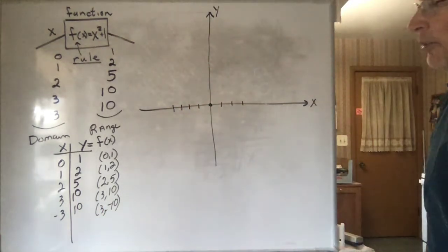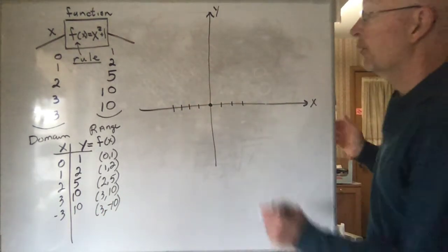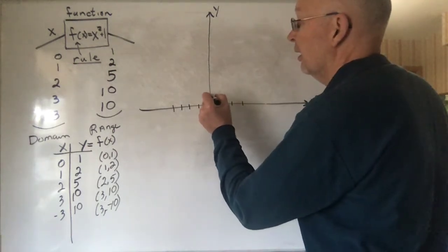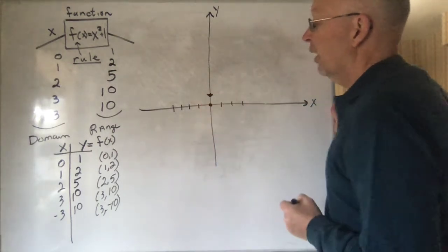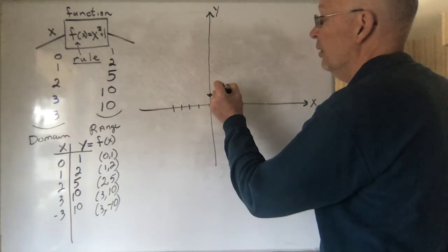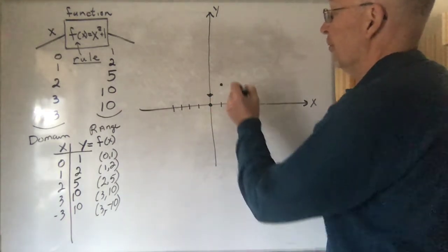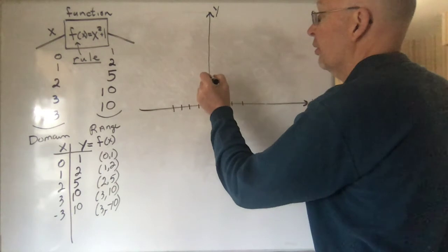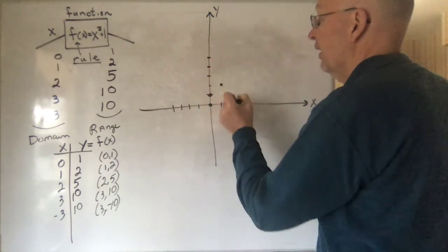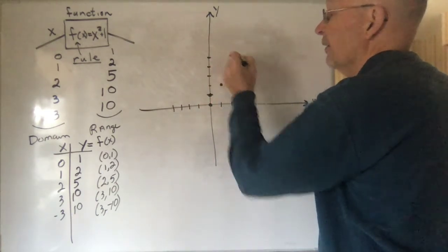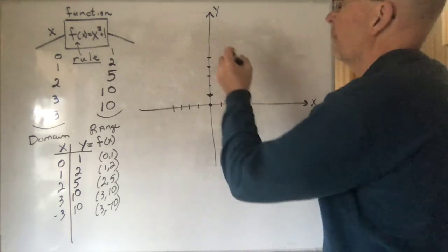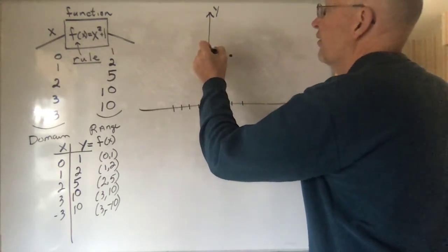So, let's plot those ordered pairs and see what we get. Here's the (0, 1). Here's the (1, 2). Here's the (2, 5). I'm going to run out of room here pretty quickly.